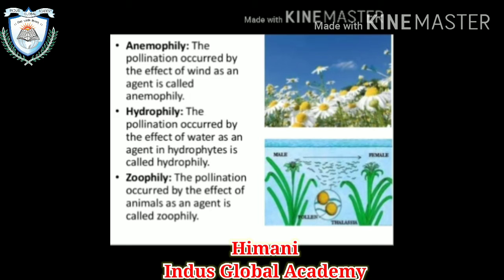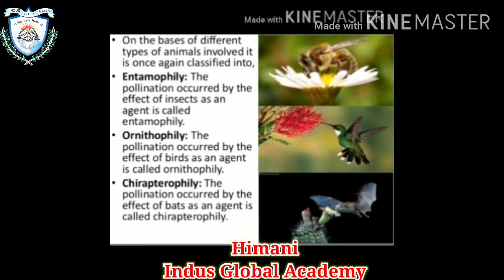First is anemophily — the pollination that occurs by the effect of wind is known as anemophily. Second, hydrophily — the pollination that occurs by the effect of water as an agent is known as hydrophily. In zoophily, the pollination occurs by the effect of animals as an agent. It's called zoophily.